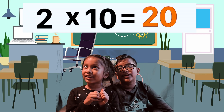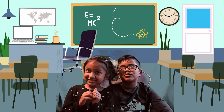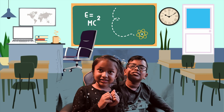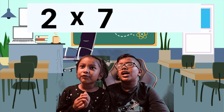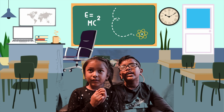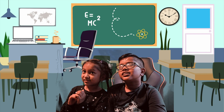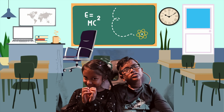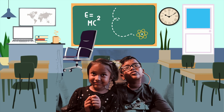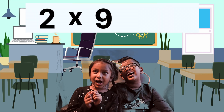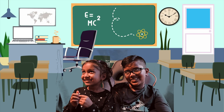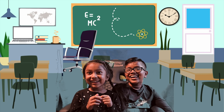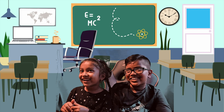2 times 10 equals 20. 2 times 7 is 14. 2 times 9 is 18.